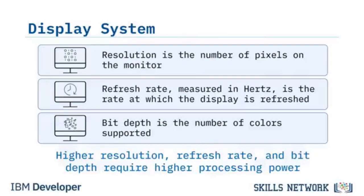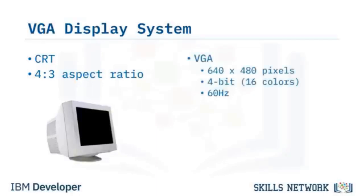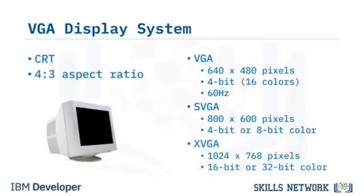Initial displays used CRTs with a 4x3 aspect ratio, supporting VGA standards. The earliest VGA supported 640x480 pixels with a 4-bit 16-color display at 60Hz. This was superseded by SVGA at 800x600 resolution with 4 or 8-bit color, then XGA supporting 1024x768 pixels, 16 or 32-bit colors, and a higher refresh rate — all using a 4x3 aspect ratio.